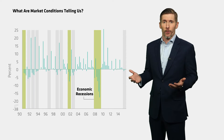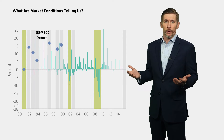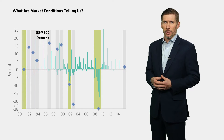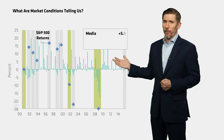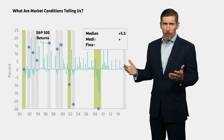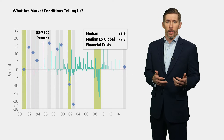Perhaps more importantly, it's a very poor forecaster of returns. During earnings recessions in the U.S., we've averaged 5.5% returns, 8% if we exclude the great financial crisis. So let's separate the macro from the market.